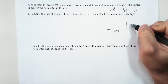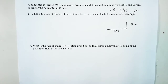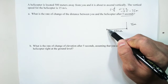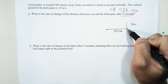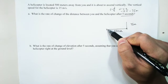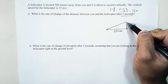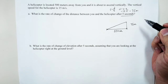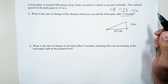We label this as 75 meters. Part A asks: what is the rate of change of the distance between you and the helicopter after five seconds? The distance between you and the helicopter starts at 500 meters and increases as the helicopter goes up. We can use the Pythagorean theorem to find that distance.